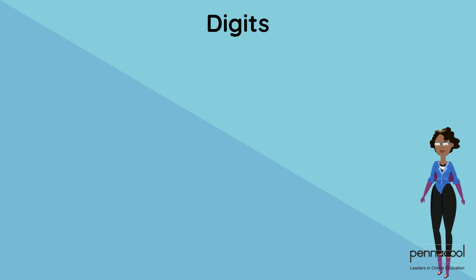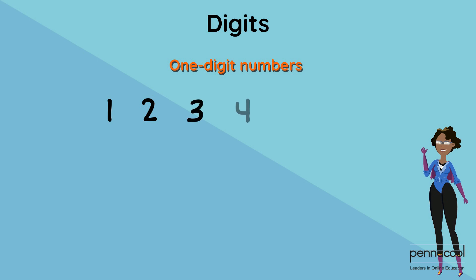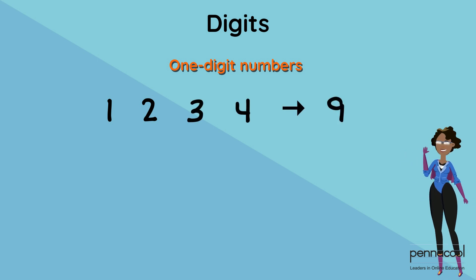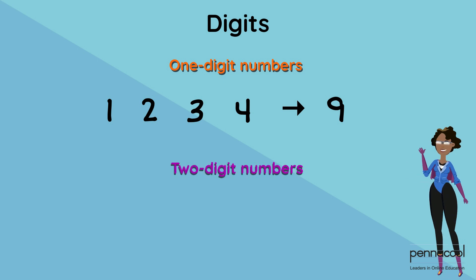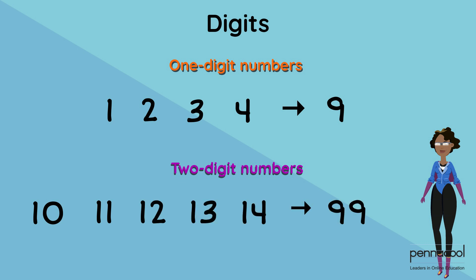Numbers are made of digits. One-digit numbers, for example, are like 1, 2, 3, 4 — there is only one digit. Two-digit numbers are numbers that — guess what? Yes, have two digits in them, and they look like 10, 11, 12, 13, 14, all the way up to 99.